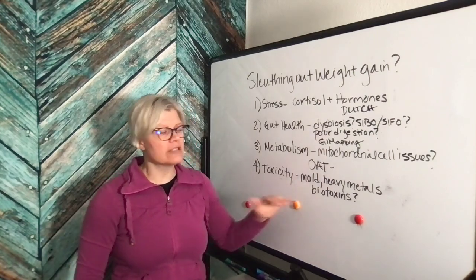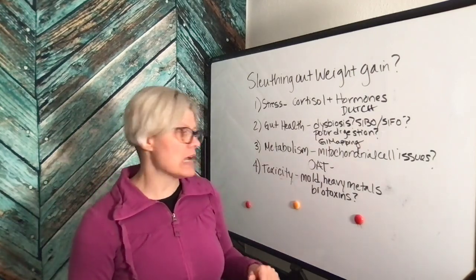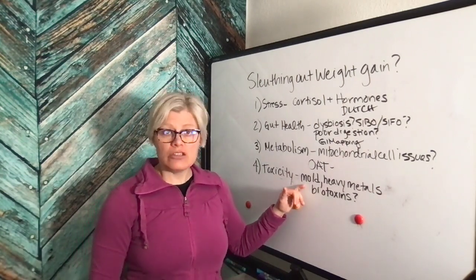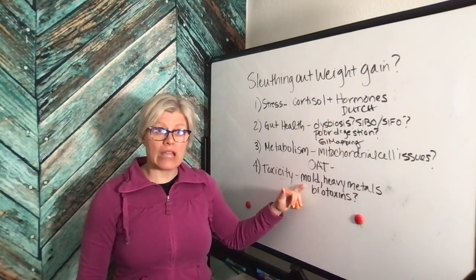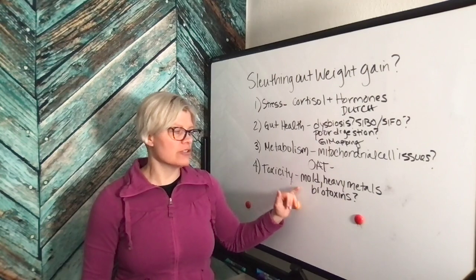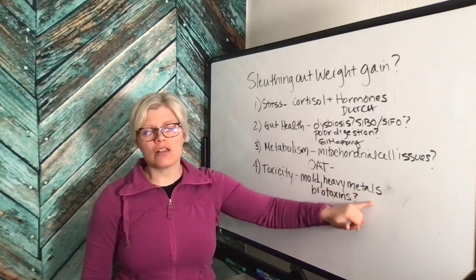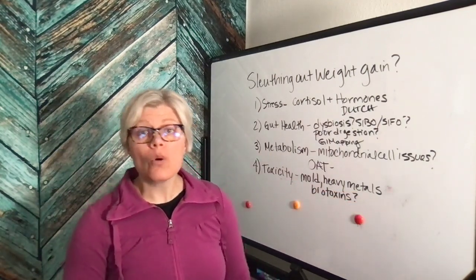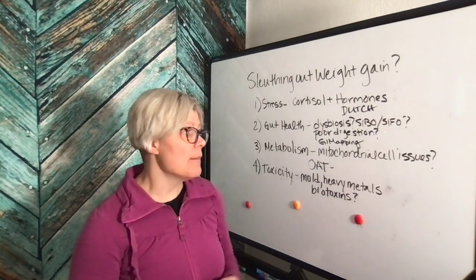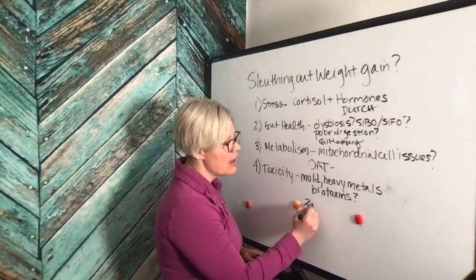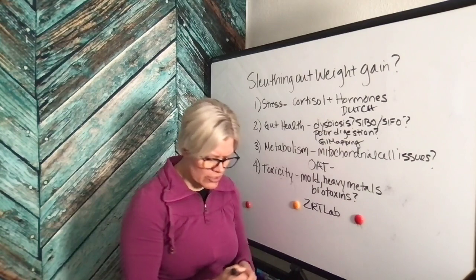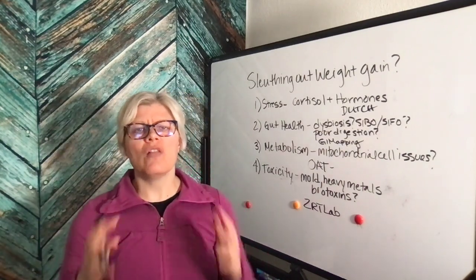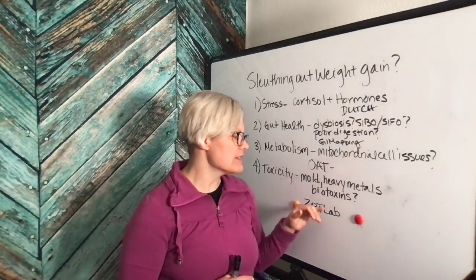There are multiple different ways of testing these guys. You can look at mold in the urine and see what levels are actively in your body. You can also look at heavy metals through urine or through blood. There's a company called ZRT Lab. I usually use their testing. There's also Vibrant Wellness. There's a lot of different companies out there to assess this.